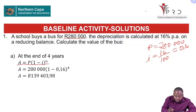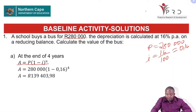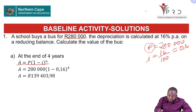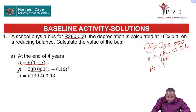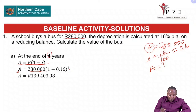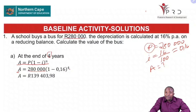We substitute: A is our unknown, P is 280,000, i is 0.16, and n is 4 because we are looking for the value after 4 years. We press and punch everything into our calculator, and A becomes 139,403.98.